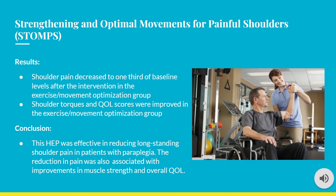After following this intervention program, shoulder pain decreased to one-third of baseline levels in the exercise optimization group. Shoulder torques and quality of life scores improved as well. These results led to the conclusion that the home exercise program was effective in reducing long-standing shoulder pain in patients with paraplegia, with associated improvements in muscle strength and quality of life. The STOMPS trial further reinforced the CPG recommendation to incorporate stretching and resistance training for reducing shoulder pain in patients with SCI.